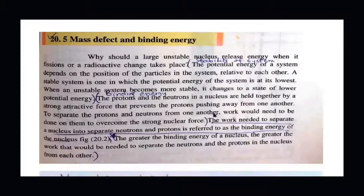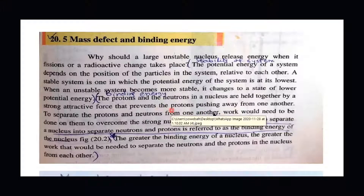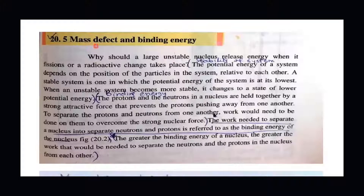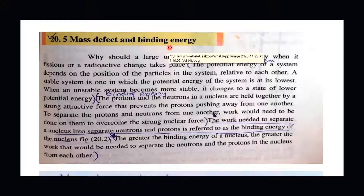Now we define binding energy. Binding energy is the force of attraction present between the neutrons and protons inside the nucleus. In any nucleus, the presence of protons and neutrons is only due to the binding energy of that nucleus. This binding energy comes from the mass defect. Mass defect is a missing mass from the nucleus, and this missing mass is converted into energy during the formation of the nucleus, appearing as binding energy — the strong attractive force between neutrons and protons inside the nucleus.